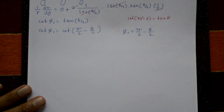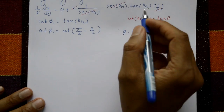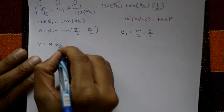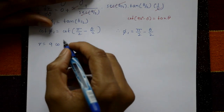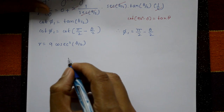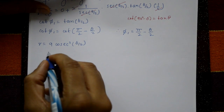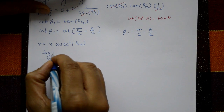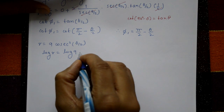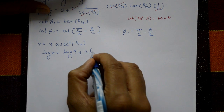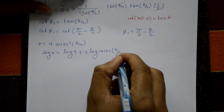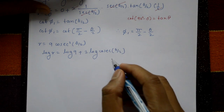For the second curve, r = 9·cosec²(θ/2). Taking log on both sides: log(r) = log(9) + 2·log(cosec(θ/2)), using the log property.